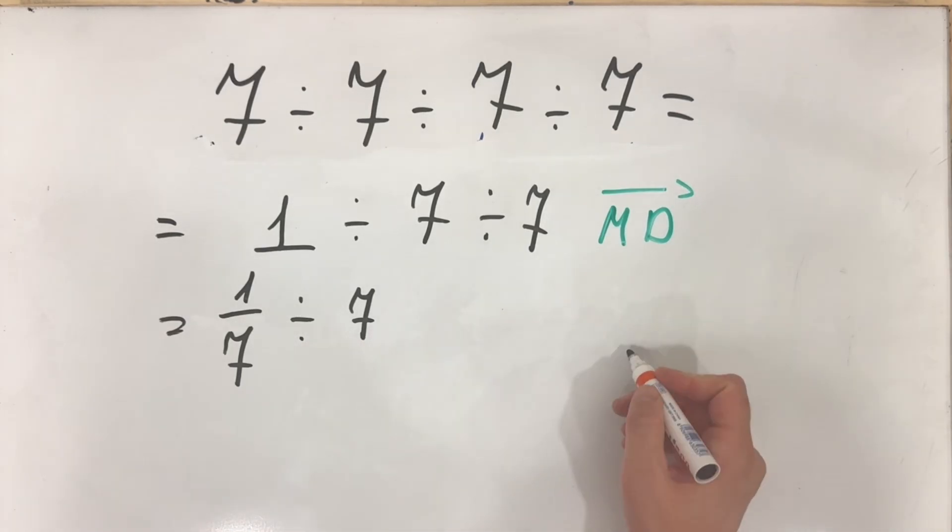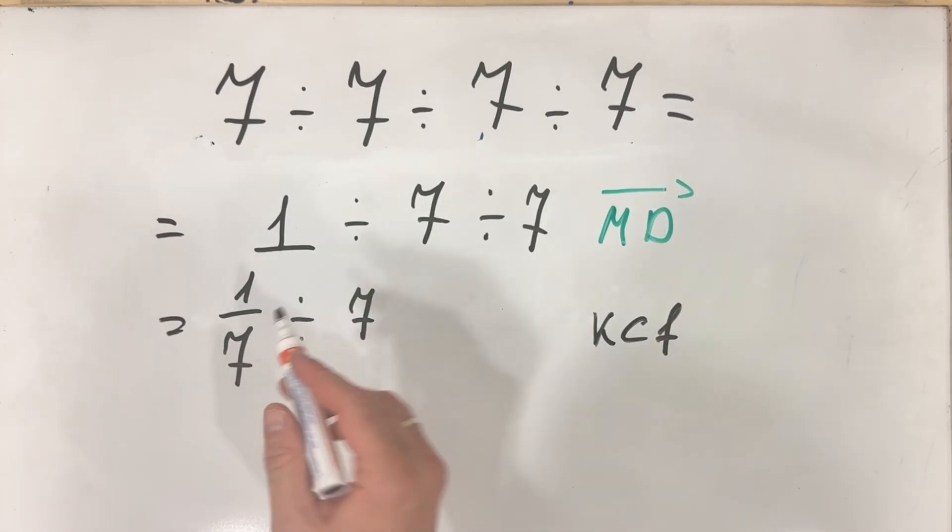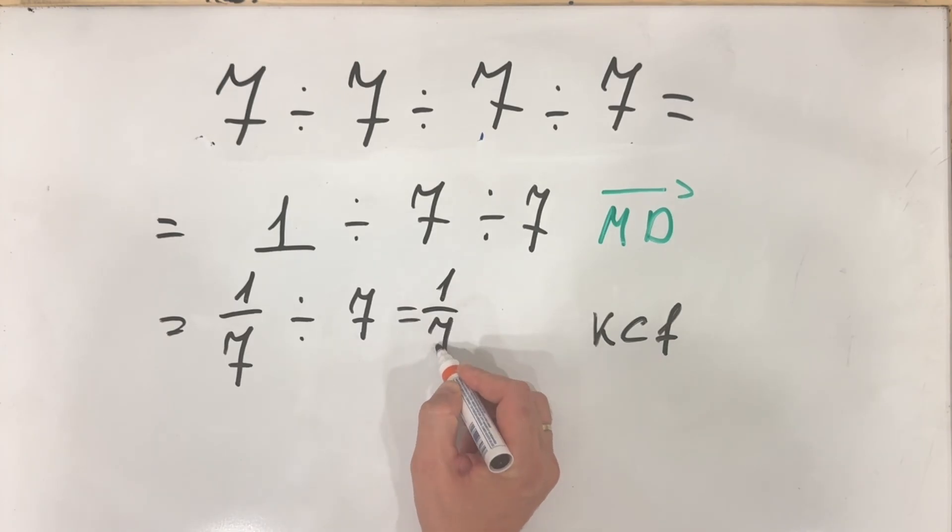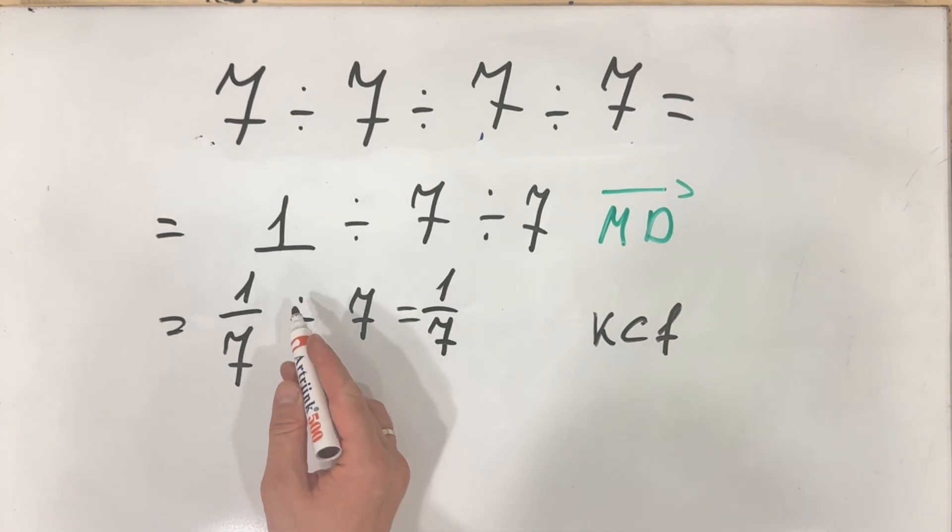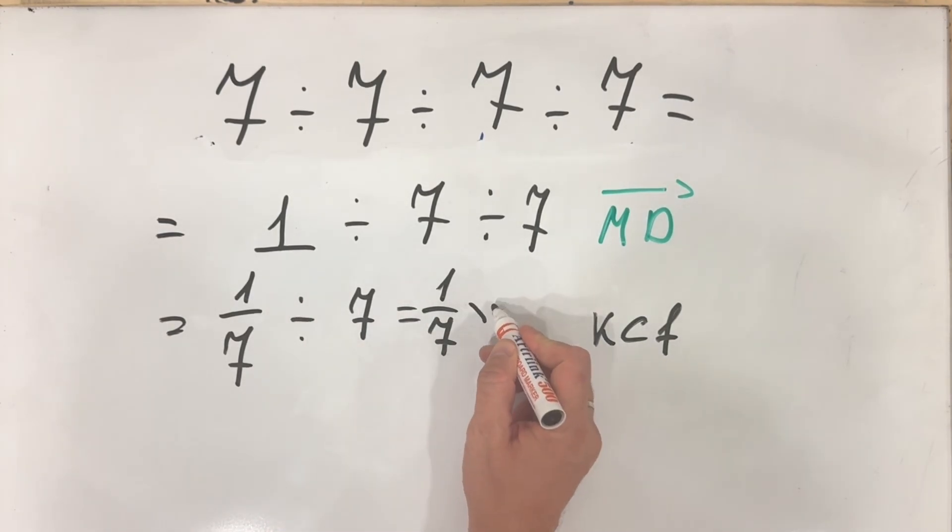So the easiest way is to apply the KCF rule, which means keep the first. So we are keeping the first number, change the sign. So from division, we change it to multiplication and flip the second. So basically we multiply with the reciprocal.